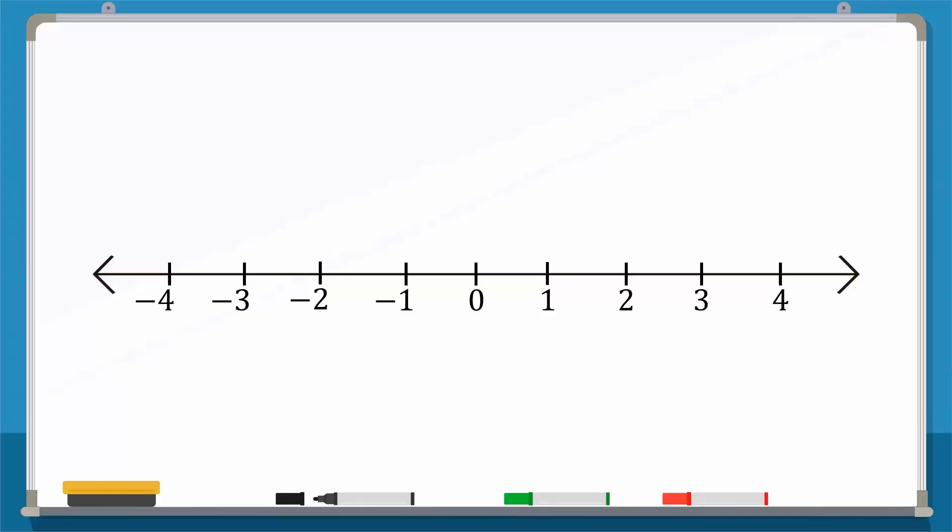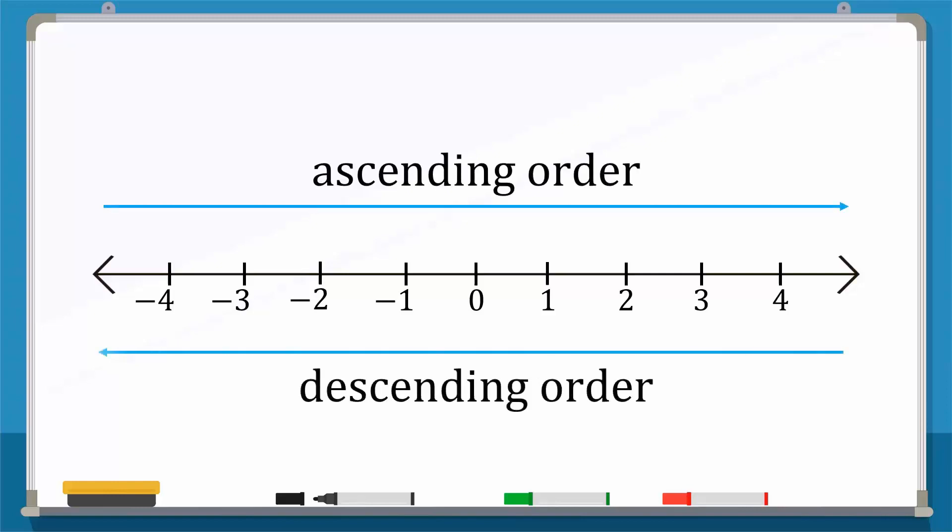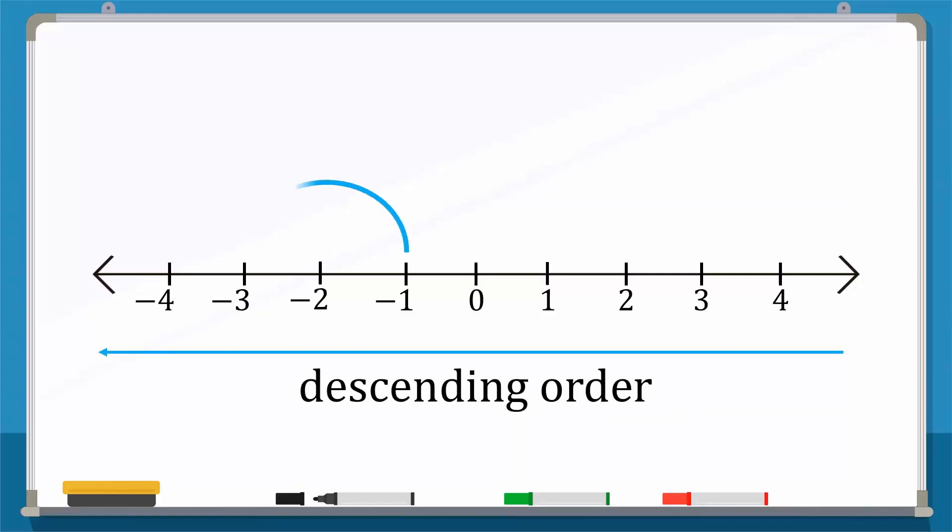An important thing to remember is that the number line is always in ascending order when we move from left to right, and is in descending order when we move from right to left. Therefore, whenever a number is located to the left of another number, it is less than that number.